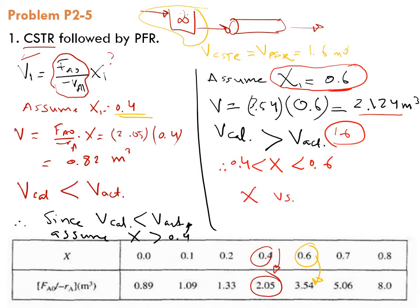If you want to minimize your options, you can do some linear interpolation, which is wrong because I know that the relationship between X and volume is not linear. However, I would just assume it's linear and interpolate with a volume of 1.6. We'll use 0.82 and conversion of 0.4, and then 2.124 with conversion of 0.6. This is only an educated guess.